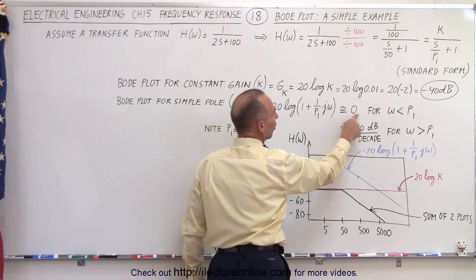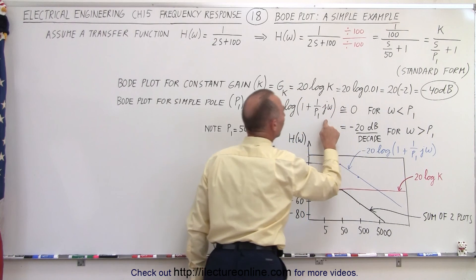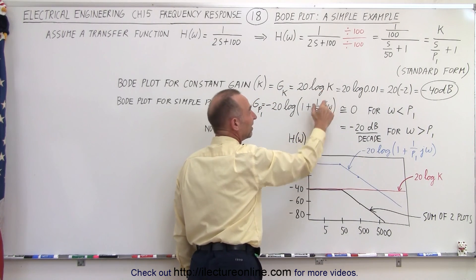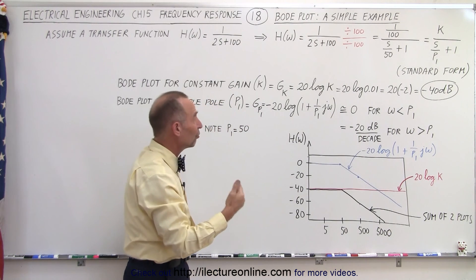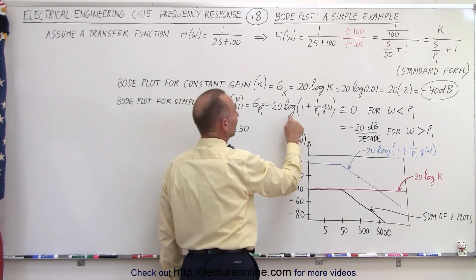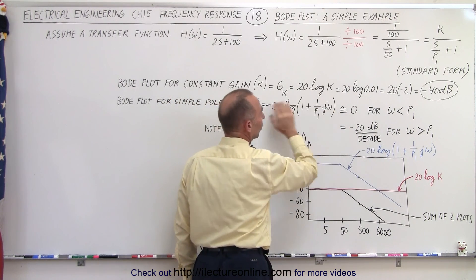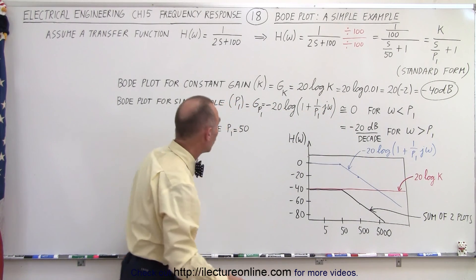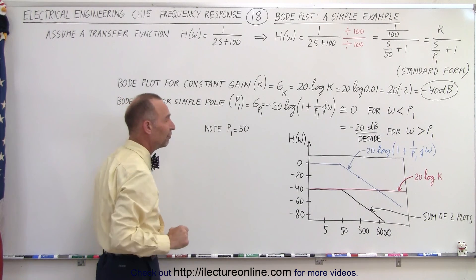Now notice for values where omega is smaller than P1. Omega divided by P1 if this is smaller than 1 that gives us a very small amount. So we can say that basically we take the log of 1 which is 0. So it would be 0 for all values of omega smaller than P1. Notice in this case P1 is equal to 50.